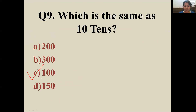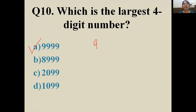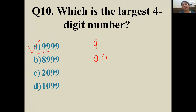Next up: which is the largest four-digit number? The easiest one — you shouldn't take more than two seconds! The answer is 9999. The largest one-digit number is 9, the largest two-digit number is 99, and similarly the largest four-digit number is 9999, because after that five-digit numbers begin.